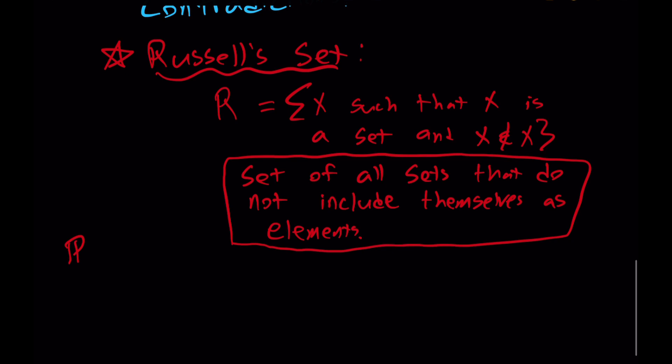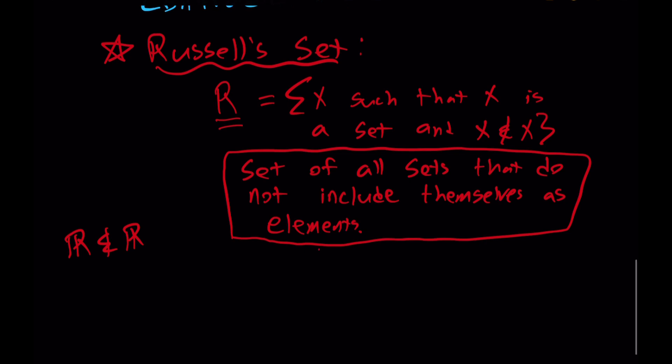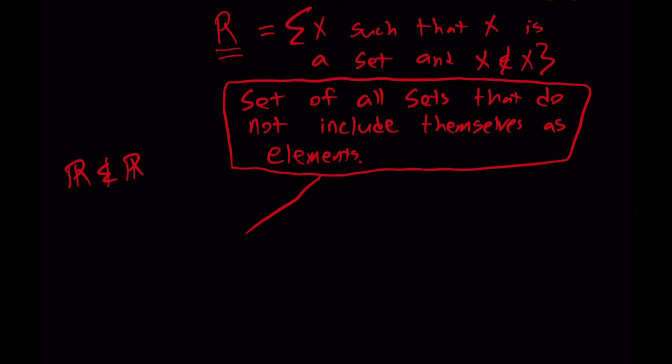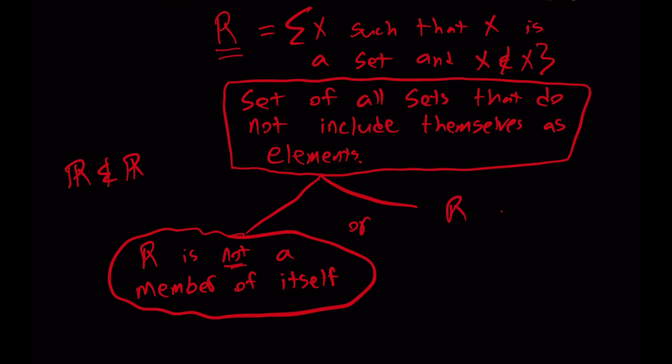If you think about the real numbers, that is not an element of the real numbers, right? So that would be included in this possibility. But the question then becomes, what about the set R itself? Because either the set of all sets that does not include themselves as members includes itself or does not include itself. Either R is not a member of itself or R is a member of itself.